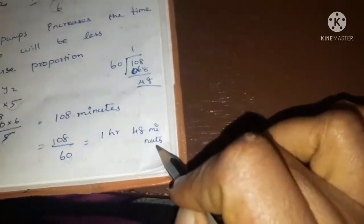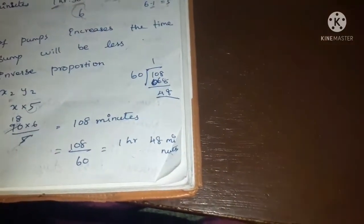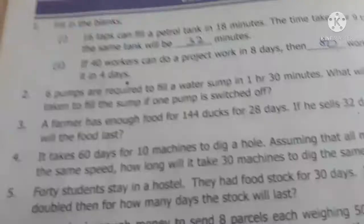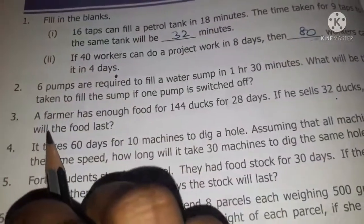108 minutes equals 1 hour 48 minutes. So the time taken when one pump is switched off is 1 hour 48 minutes. Next, we are going to the third sum.